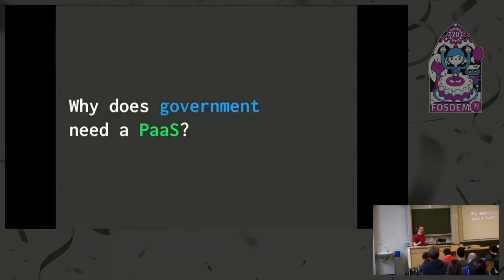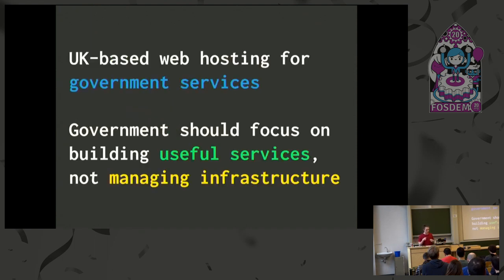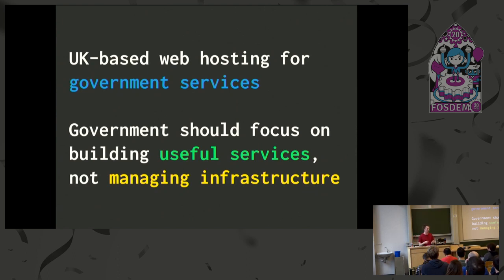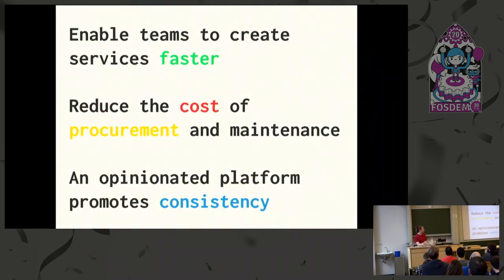Our value proposition is that government should be doing things that matter to citizens — not moving stuff around on paper. We want to create the concept of the service team doing digital transformation. For example, you want to renew your passport — you shouldn't have to know to go to the passport office with a bunch of forms. You should just open your phone, take a photo of yourself, and get a new passport. That's a reality you can live right now.